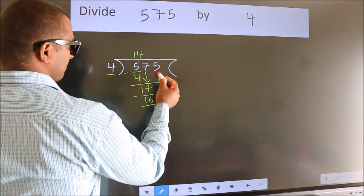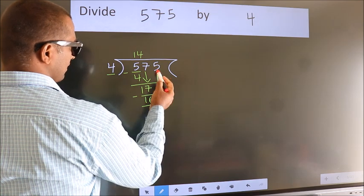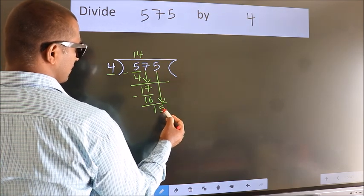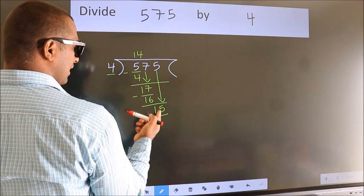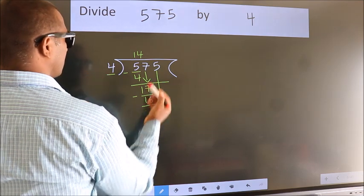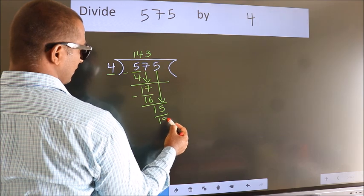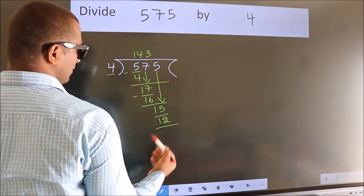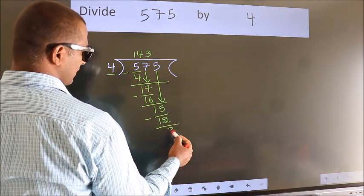After this, bring down the beside number. So, 5 down, making 15. A number close to 15 in the 4 table is 12, three times 4. Now we subtract. We get 3.